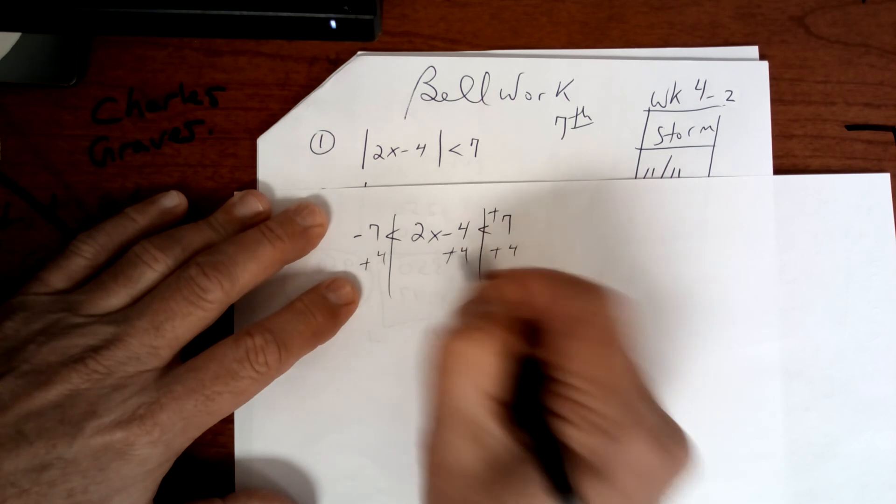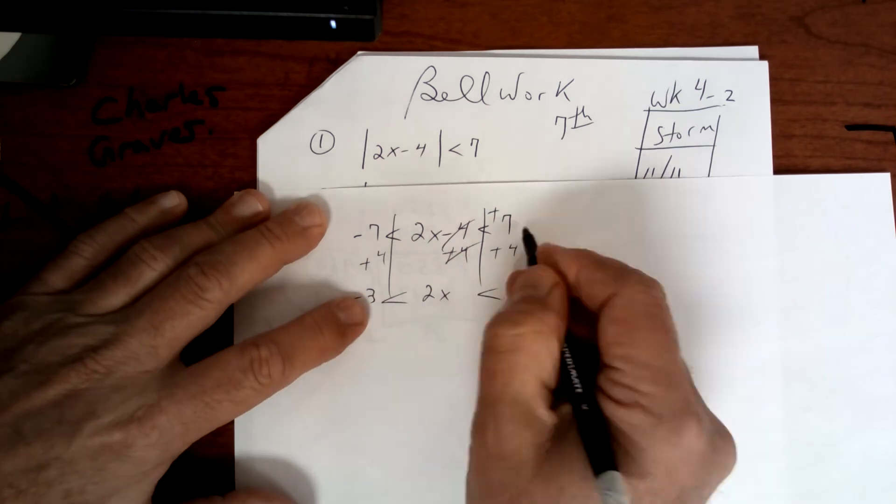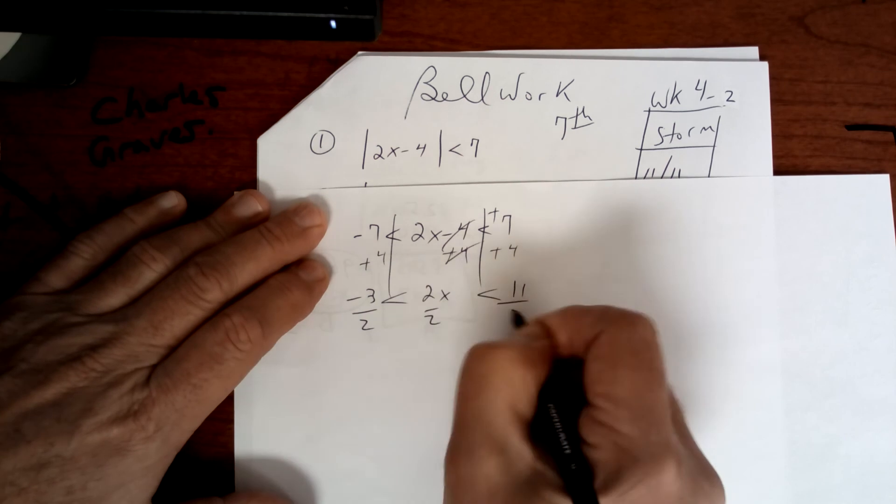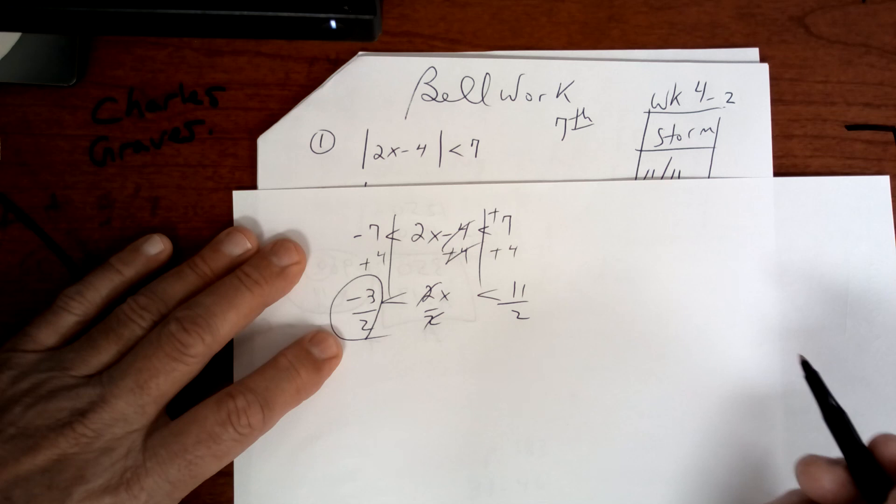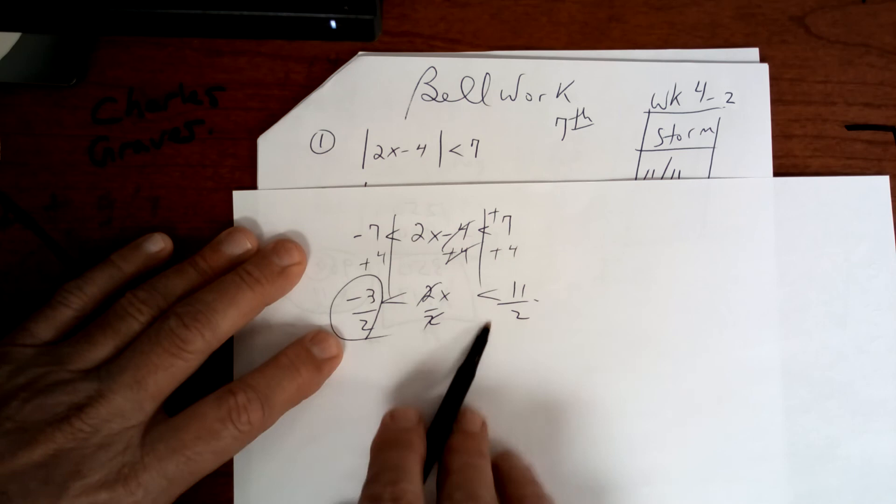Once you add 4, you're going to get 2x negative 3 on this side and you're going to get 11 on that side. You're going to divide by 2. When you divide by 2, x is going to be between that negative 1.5 and 5.5. Not inclusive. There's no line under here.